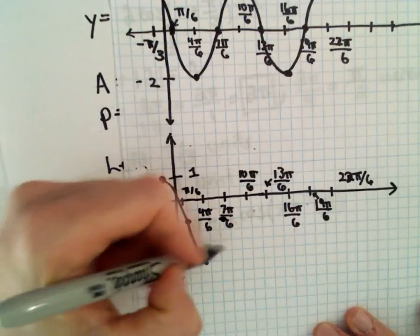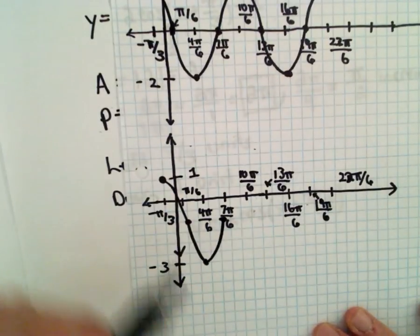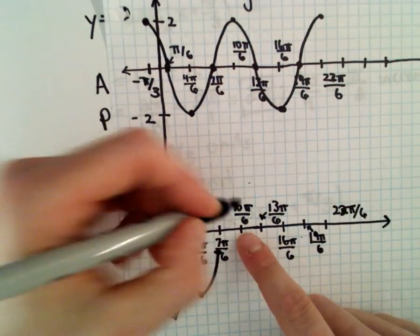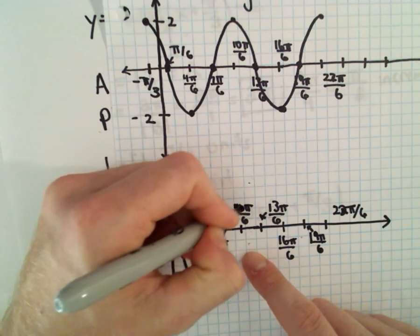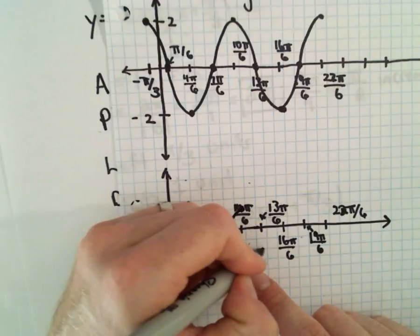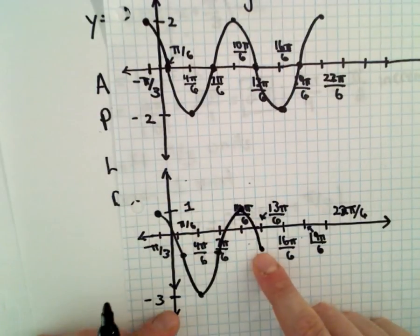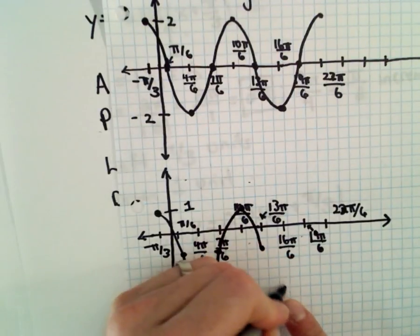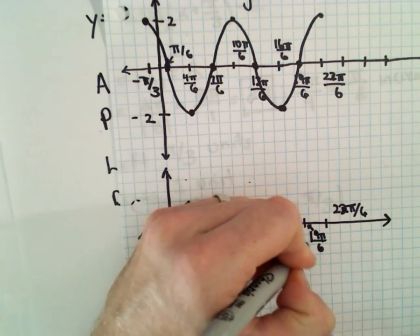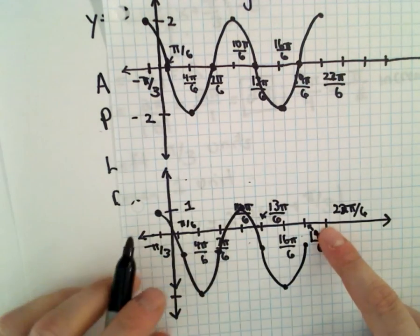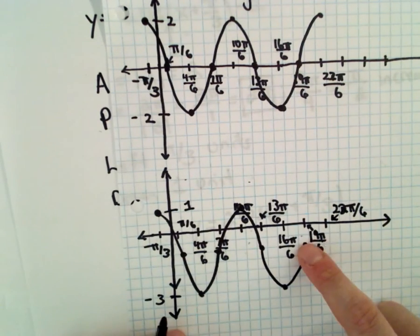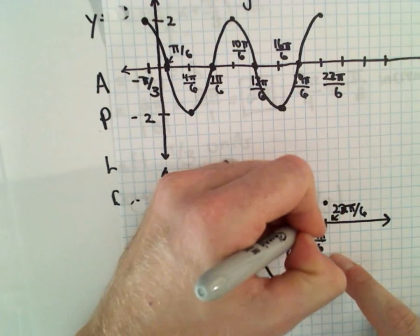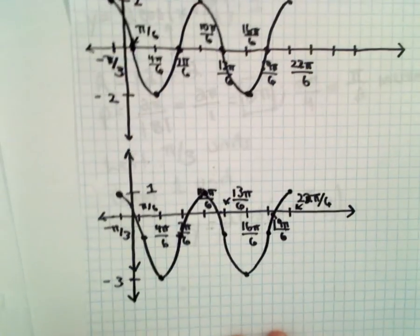At 7 pi over 6, we're back at the middle value, which is negative 1. At 10 pi over 6, instead of being at positive 2, I'm now at positive 1. At 13 pi over 6, we're at negative 1. At 16 pi over 6, we're down at negative 3. Then back up at 19 pi over 6, and lastly at 22 pi over 6, instead of being at positive 2, we'll be at positive 1. And there is a nice rough sketch.